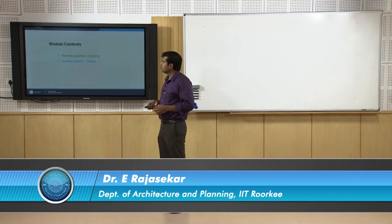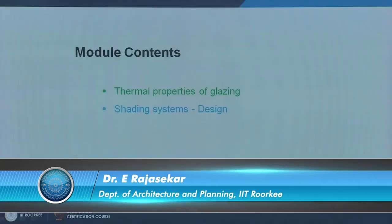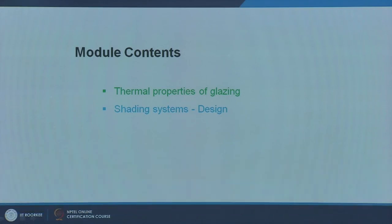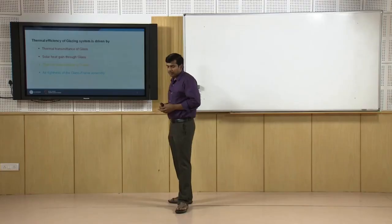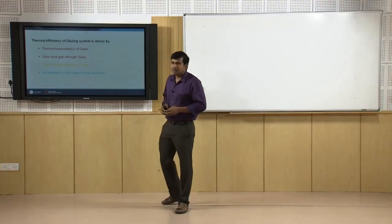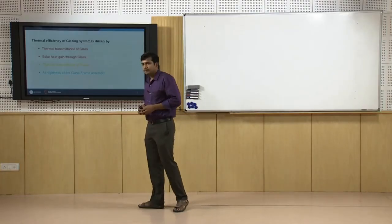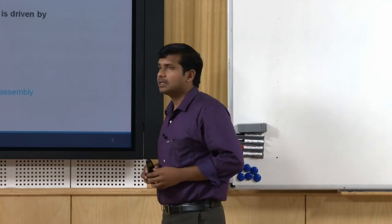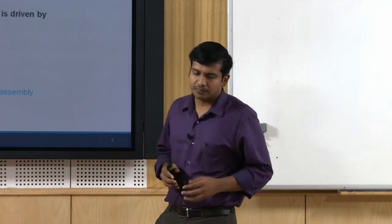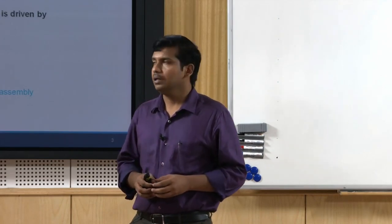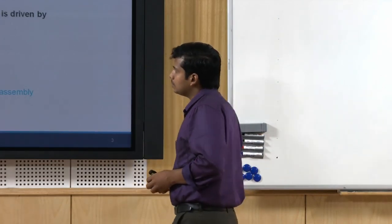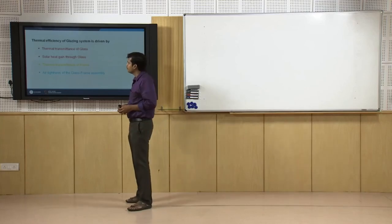We will talk about thermal properties of glazing, which is important. Then we will talk about shading system design primarily. What determines the thermal efficiency of a glazing system? The first thing is thermal transmittance of glass — the same U value we talk about for walls. The most commonly referred thing is thermal transmittance of glass.